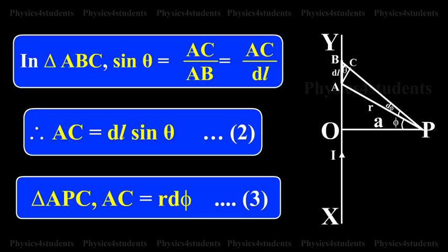From triangle APC, AC equals R dφ. This is equation 3.